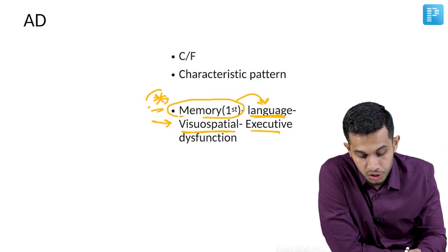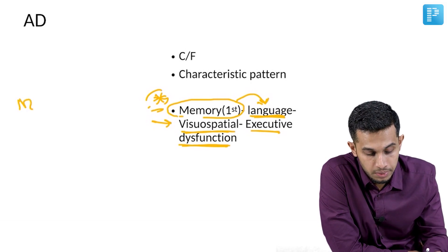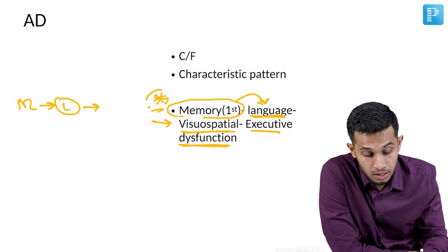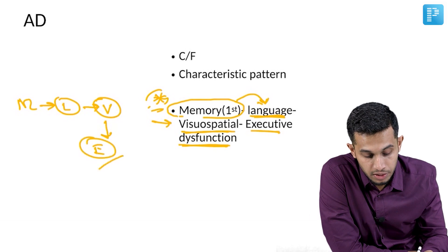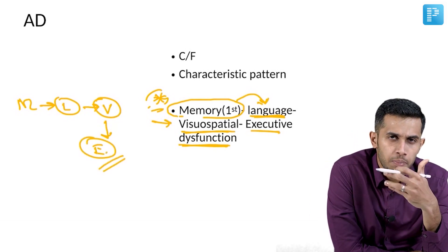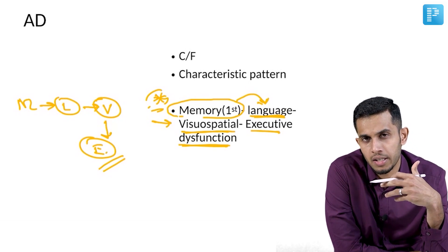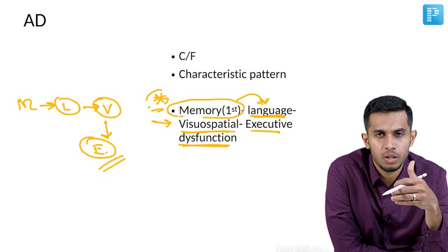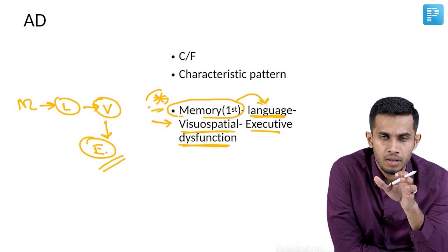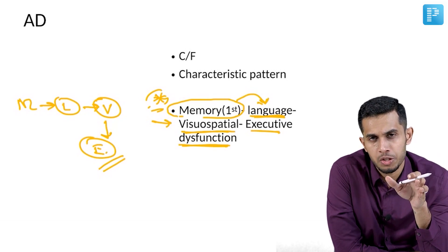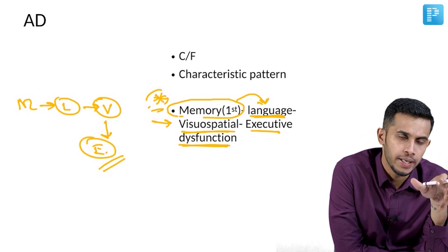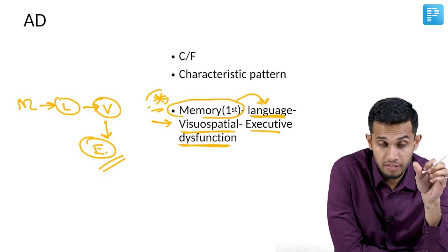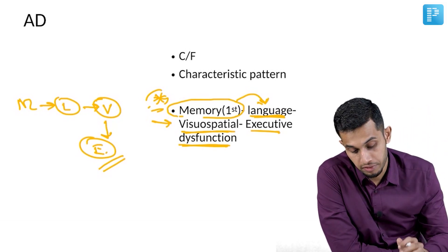Next is executive dysfunction. So the order is: first memory, next language — mainly names of objects — then visual-spatial dysfunction, and finally executive dysfunction, which manifests as poor planning, poor judgment, inability to complete a task, or inability to plan for an event. That is how it spreads.